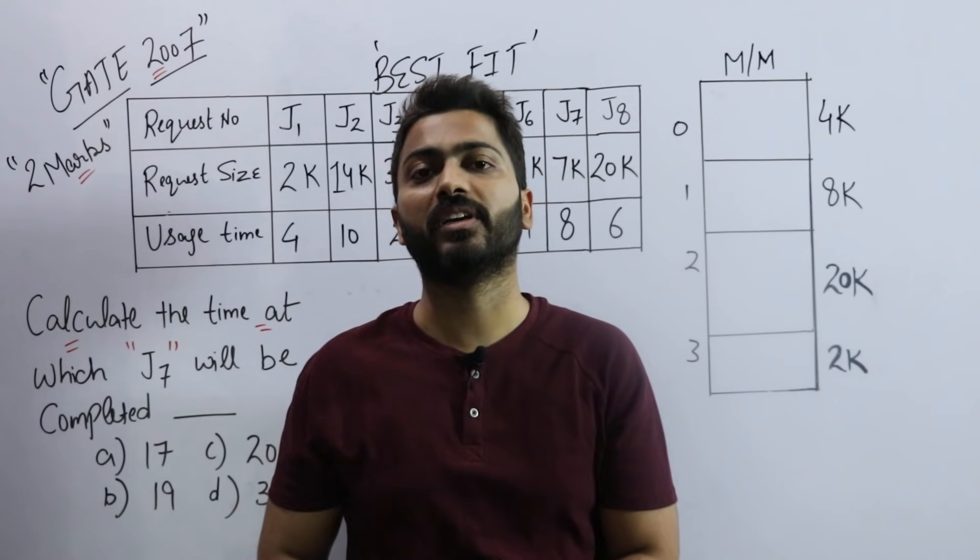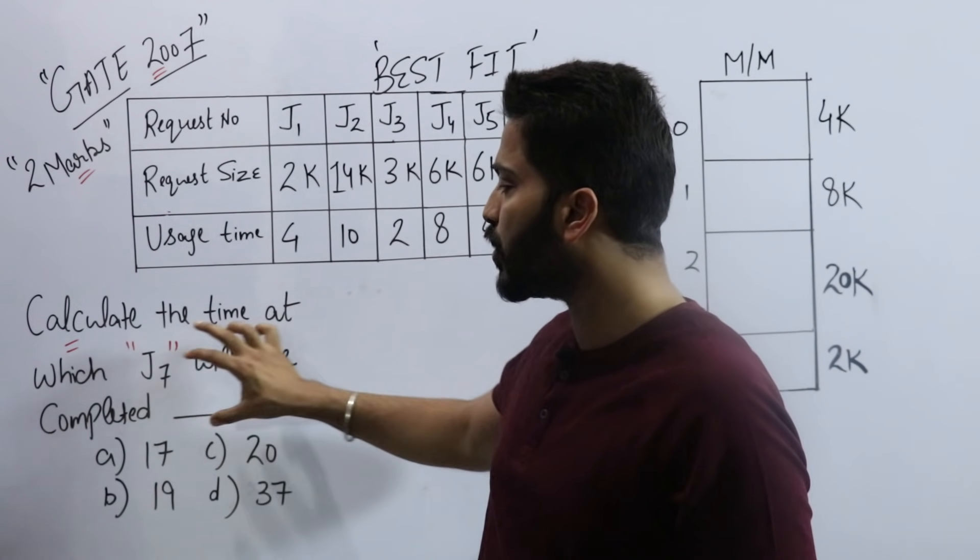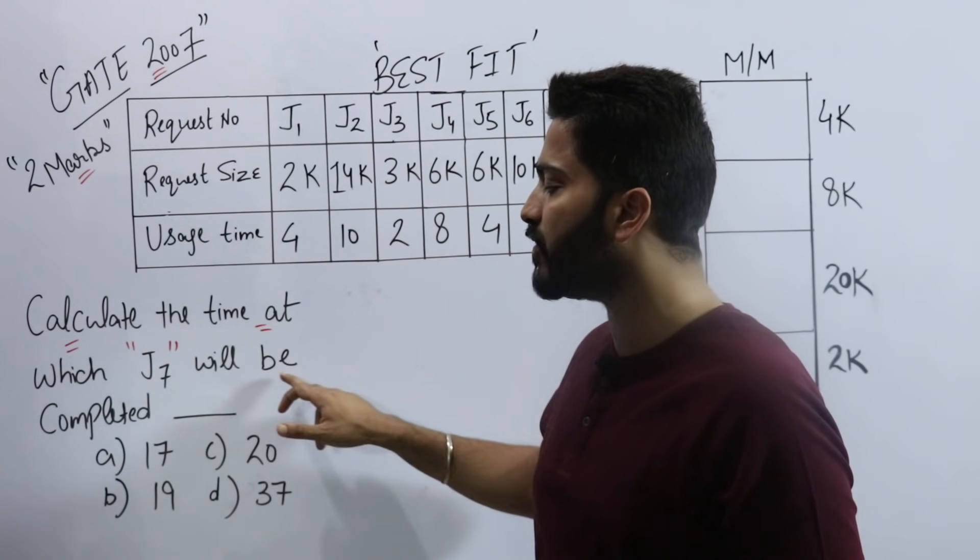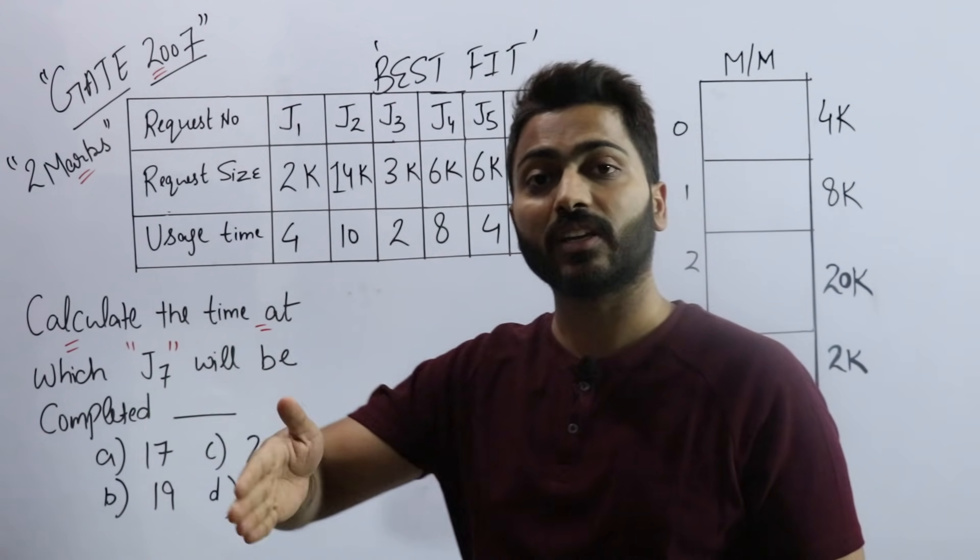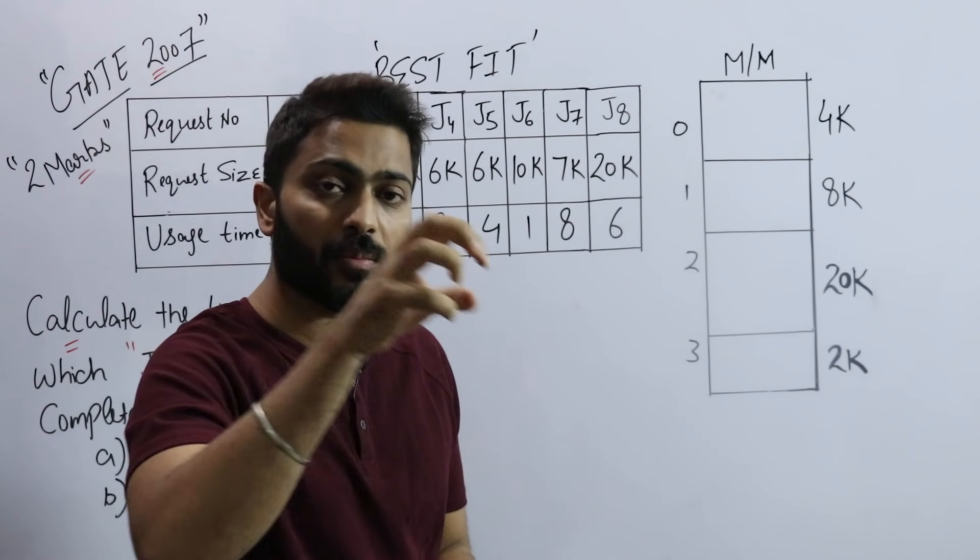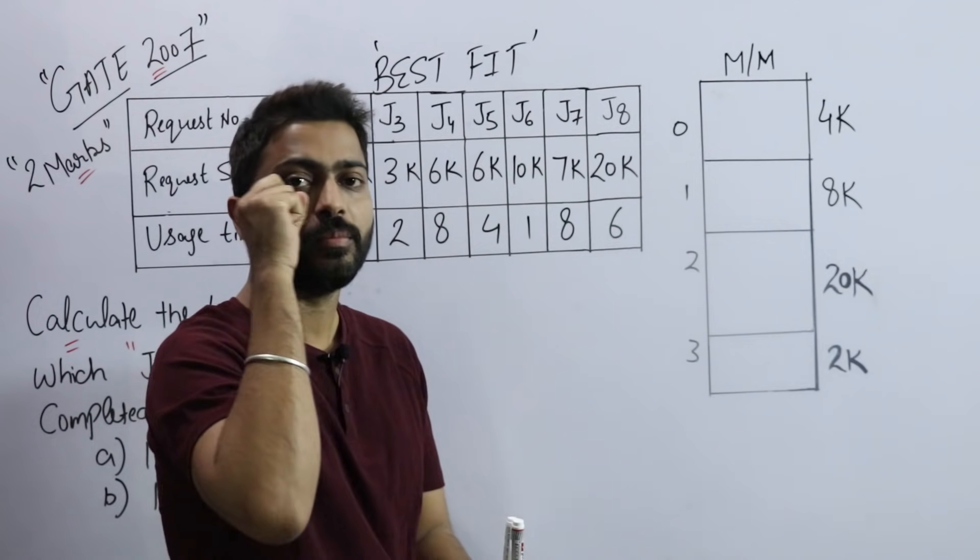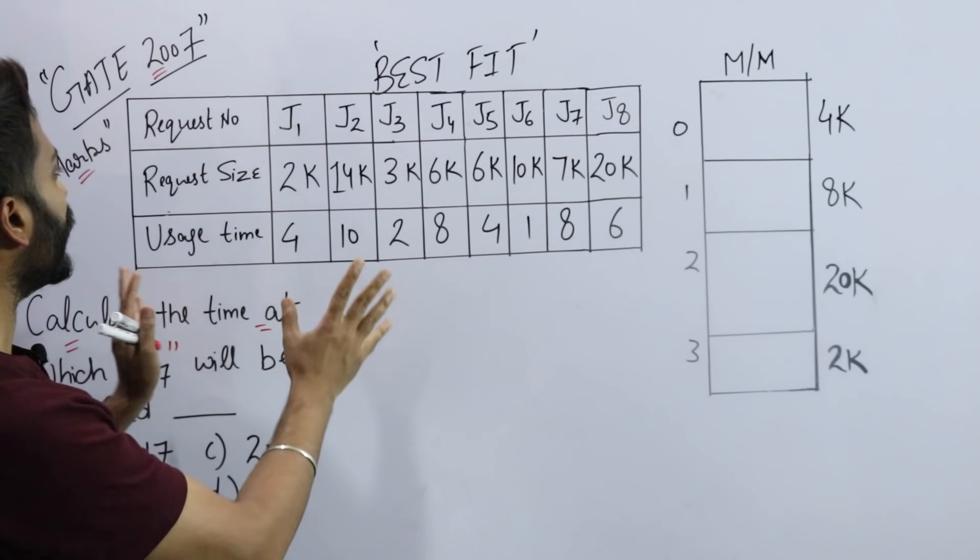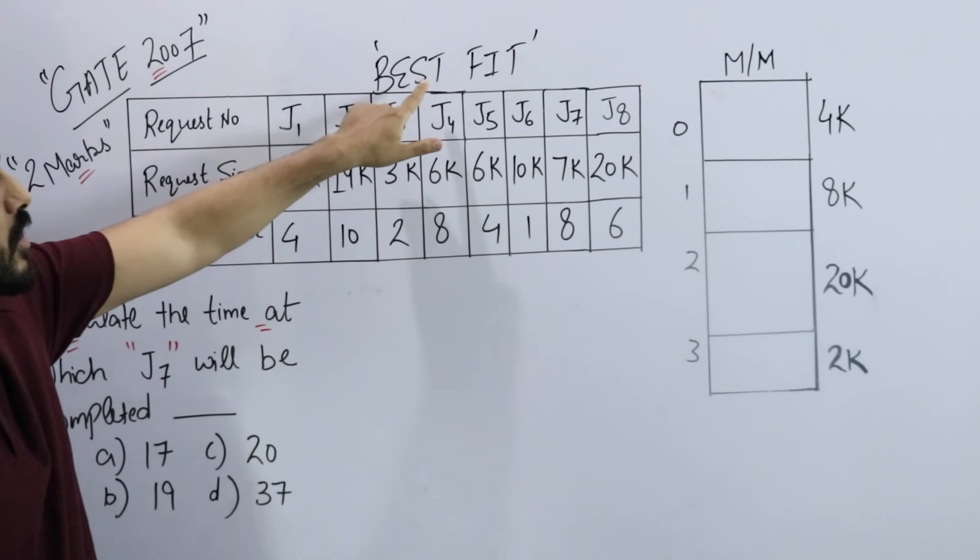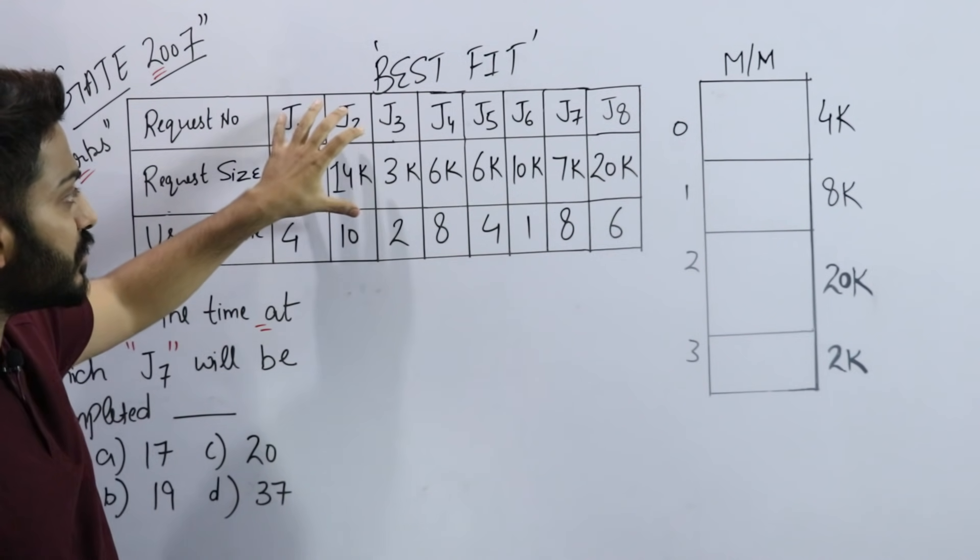But the usage time concept is new here. The question asks: calculate the time at which J7 will be completed. We need to find when J7 completes - that point in time.